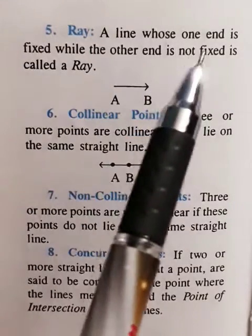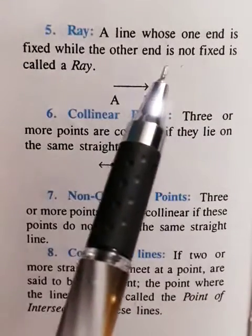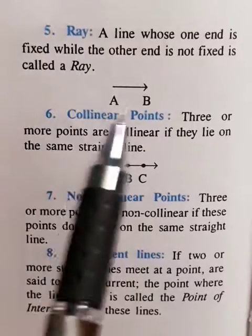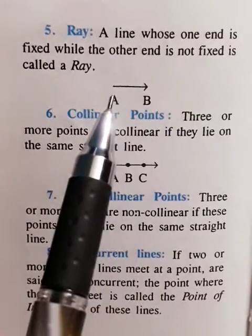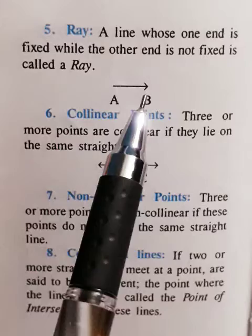Ray: a line whose one end is fixed while the other end is not fixed is called a ray. AB is a ray whose one end is fixed and other end B is not fixed.